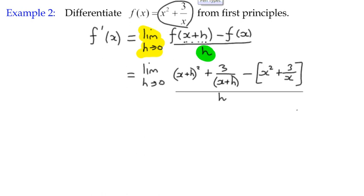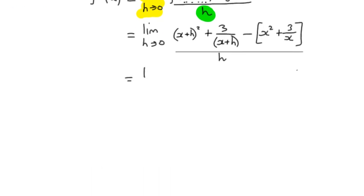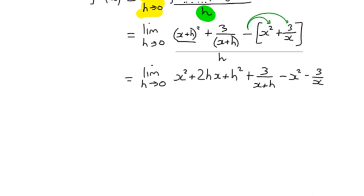Okay, so here we go. It looks a bit complex, but we can start to simplify it. First of all, by squaring out that bracket, x plus h squared. And if I do that, I get x squared plus 2hx plus h squared. We've still got our fraction 3 over x plus h. And if I multiply out this bracket by the negative 1, then I've got minus x squared and minus 3 over x. It's still all over h.